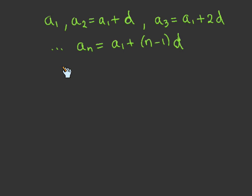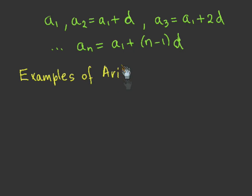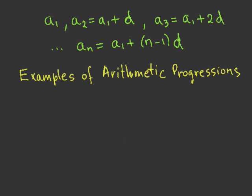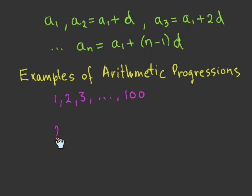This progression is more general than the sequence of natural numbers: it starts on an arbitrary number, and the difference of two consecutive terms is d instead of 1. Progressions that satisfy these conditions are called arithmetic progressions. Examples include 1, 2, 3, up to 100 — our special case, where the first element is 1 and d equals 1 — and also 2, 4, 6, up to 200, where the first element is 2 and the increment is 2.